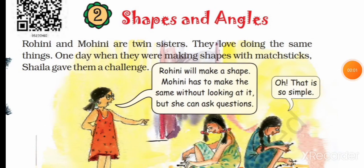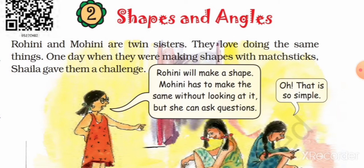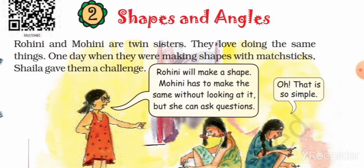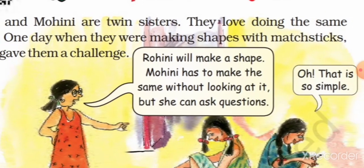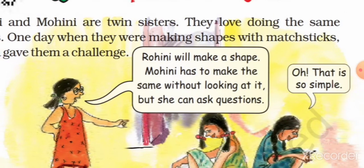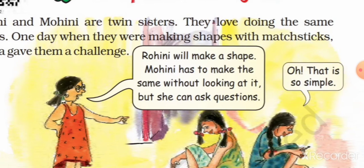Students, let's go to the lesson now. Rogini and Mogini are twin sisters. They love doing the same things. One day, when they were making shapes with matchsticks, Shaila gave them a challenge. Rogini will make a shape, and Mogini has to make the same without looking at it — but she can ask questions.